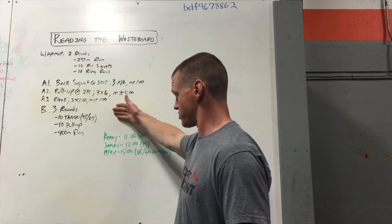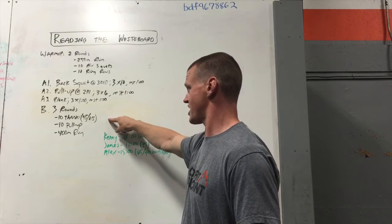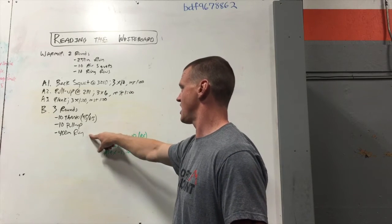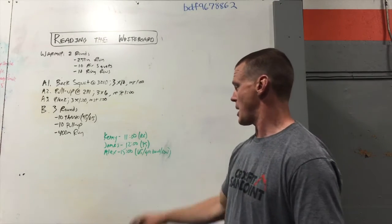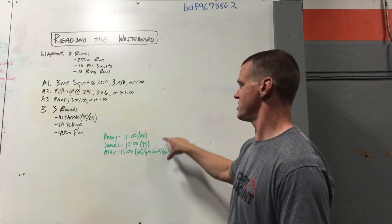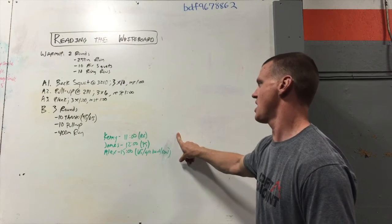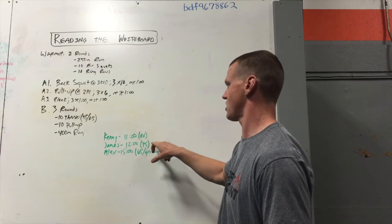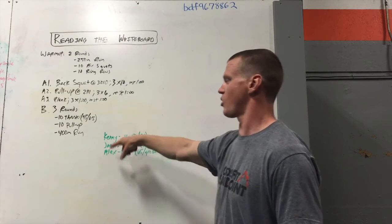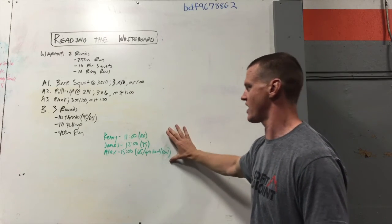So for this workout, three rounds, ten thrusters at 95 or 65, ten pull-ups, and a 400-meter run. Next to that, or below that, or somewhere else on the board, you're going to see a series of names. Your name may be in that group, and some times or points, or however that this B work, or whatever the final session of the day is quantified.